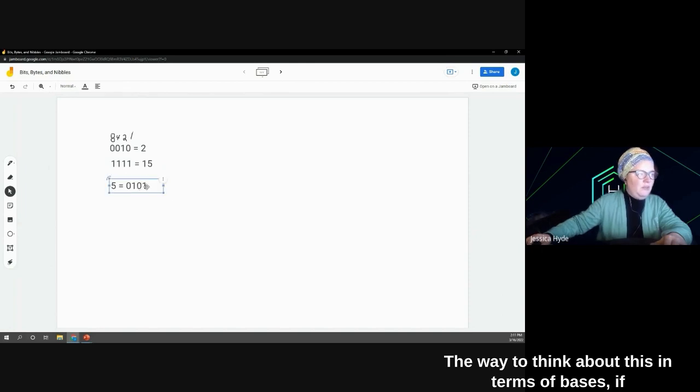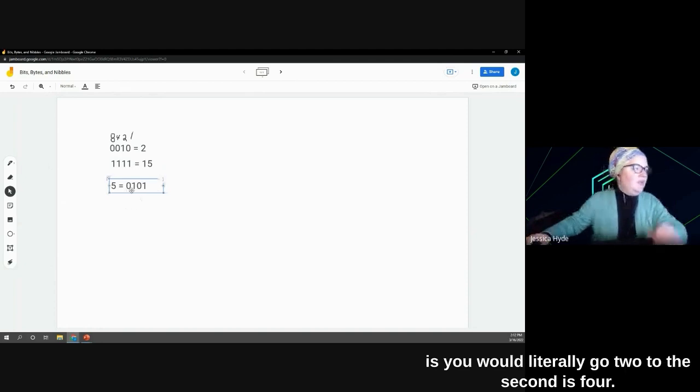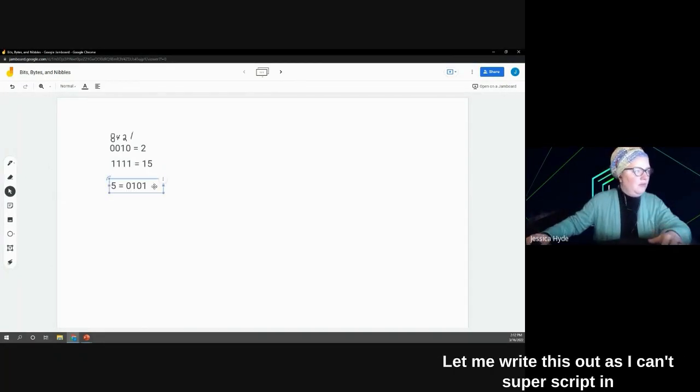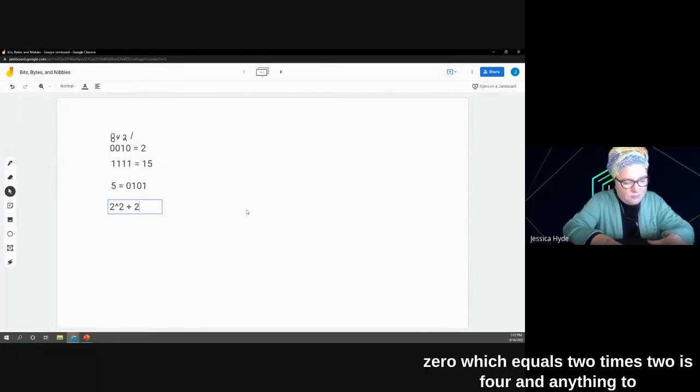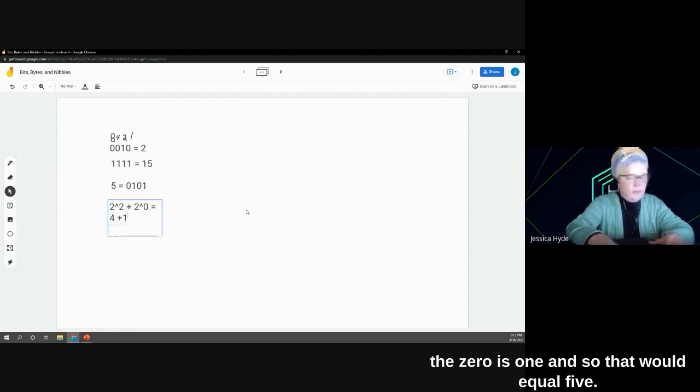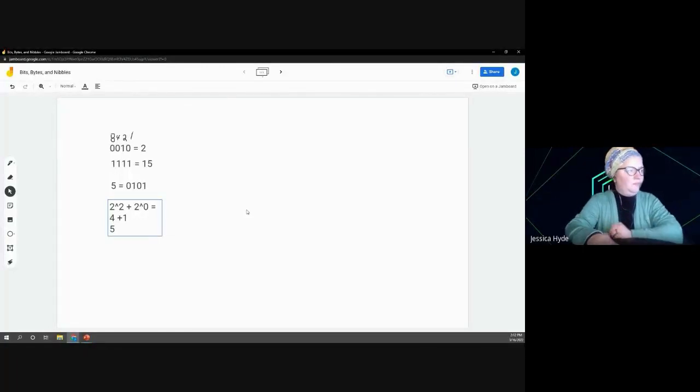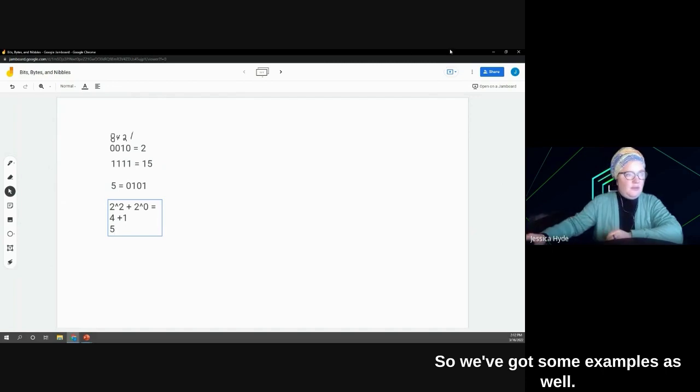The way to think about this in terms of bases, if you're not just thinking of a column being on and off, is you would literally go 2 to the 2nd is 4, and write this out as 2 to the 2nd plus 2 to the 0, which equals 2 times 2 is 4, and anything to the 0 is 1, and so that would equal 5.